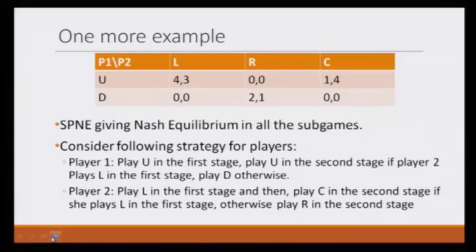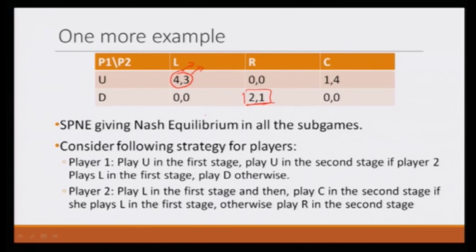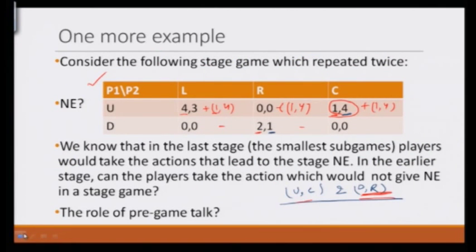The key question is: can we get any sort of cooperation? Notice that U comma L gives 4 to player 1 and 3 to player 2, whereas D comma R gives 2 comma 1 — they are both worse off. So can there be a mechanism or a plan which would make them play U comma L in the first stage? Notice that U comma L is not one of the Nash equilibria; the only two Nash equilibria are U comma C and D comma R.